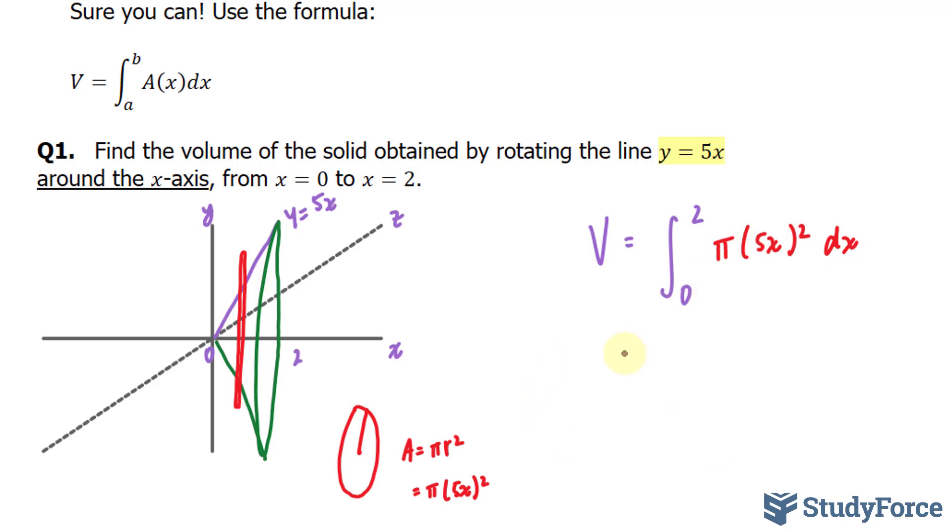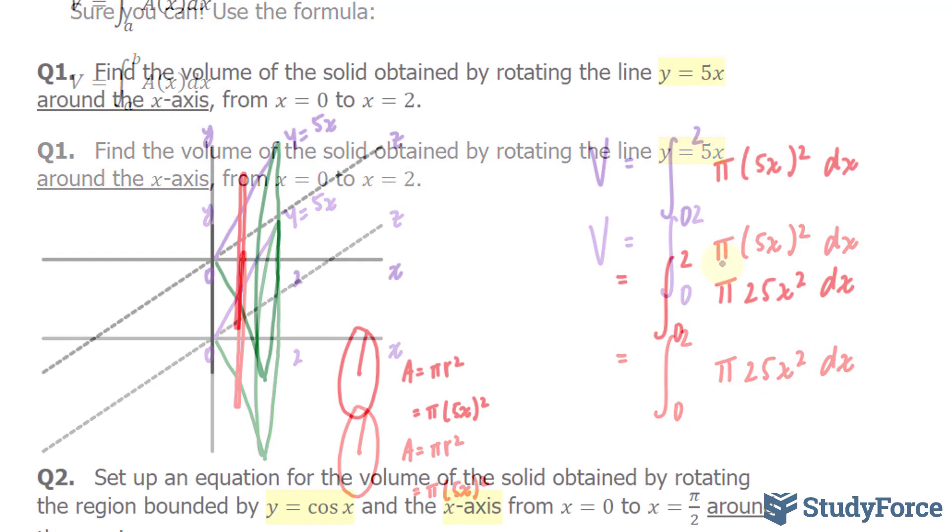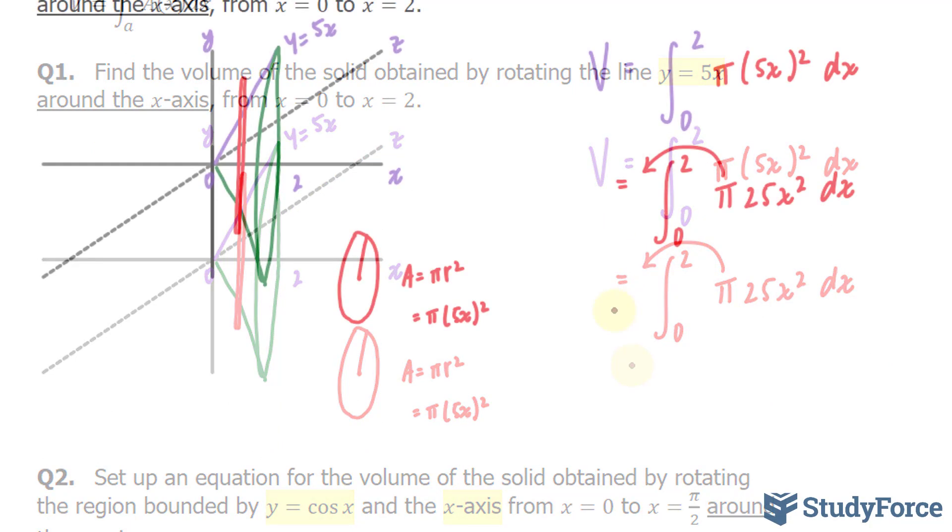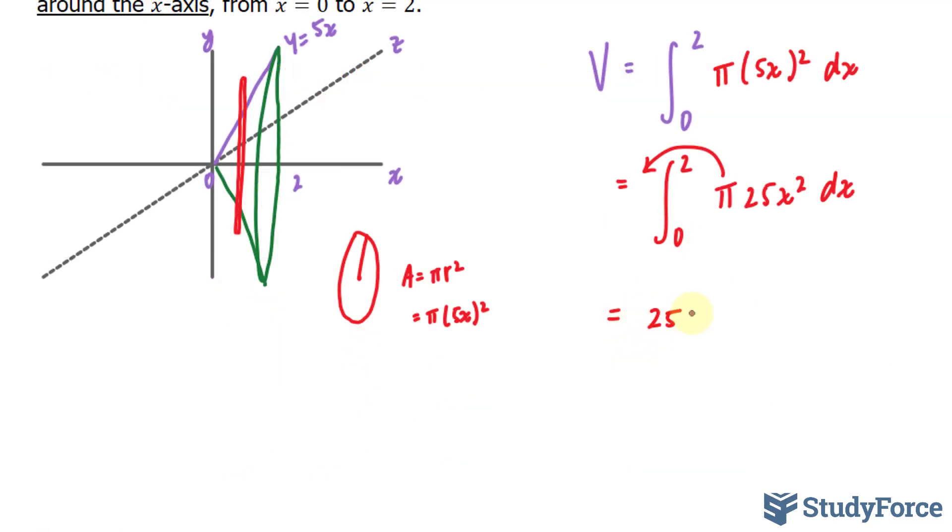Let's first simplify this. The integral between 0 and 2. We have pi times 25x squared dx. We can pull out pi and 25,